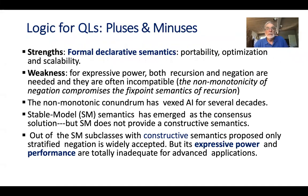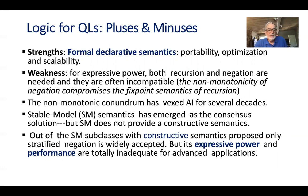Let's understand the strengths and weaknesses of logical languages. The strengths are the formal declarative semantics, portability, optimization, and scalability. The weaknesses stem from the fact that to reach the potential expressive power, both recursion and negation are needed, and they are often incompatible. The non-monotonicity of negation compromises the fixed-point semantics of recursion. This non-monotonic problem is not unique to databases — it has been vexing AI for several decades.